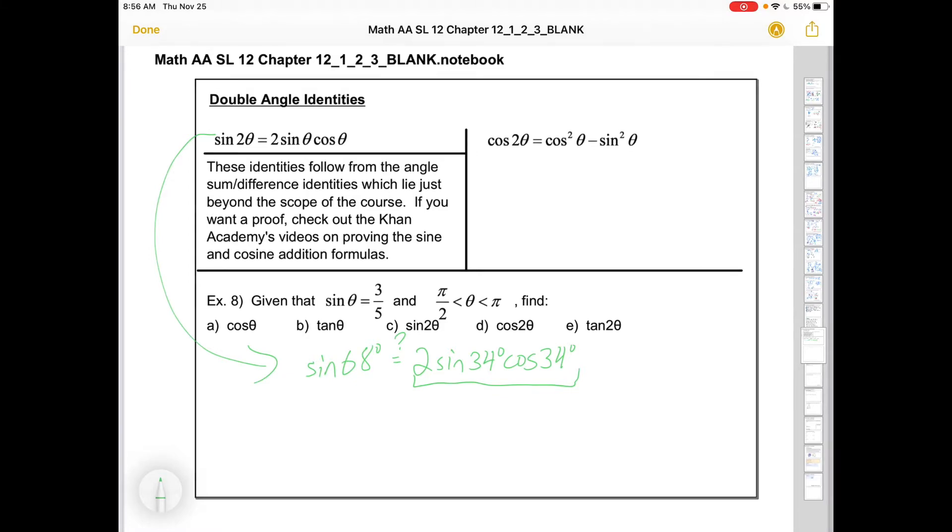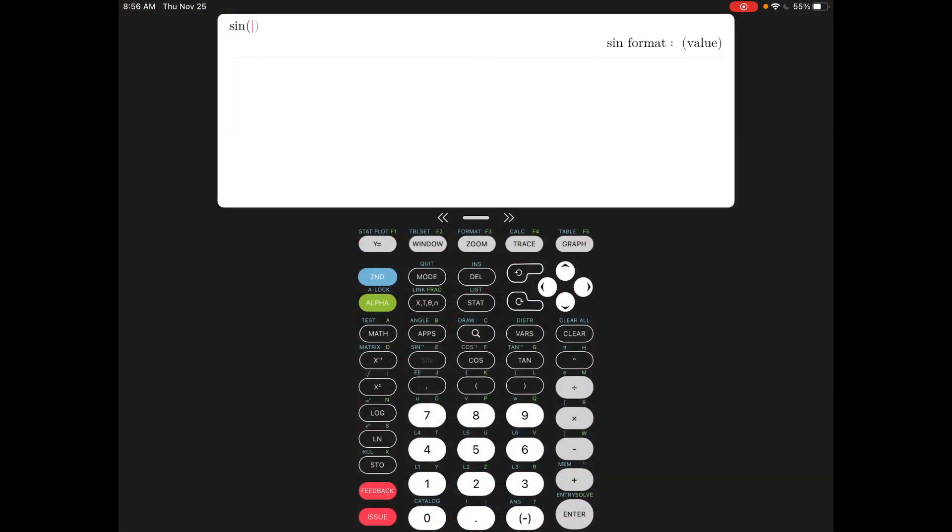Let's head to the calculator to see if this property is true. So I'm in degree mode. I'm going to type in sin 68. It wouldn't actually matter whether I'm in degree or radian mode. It's 2 sin 34 cos 34. At this point, this is just magic, but they clearly are the same and they're going to be the same for any angle.